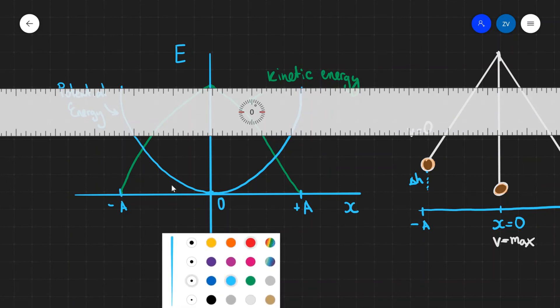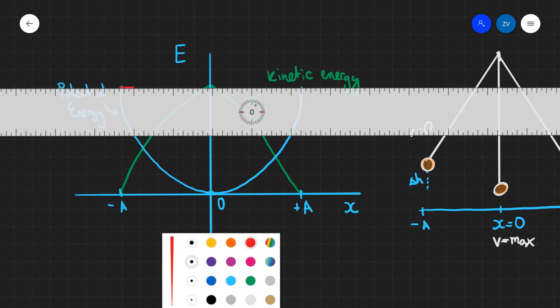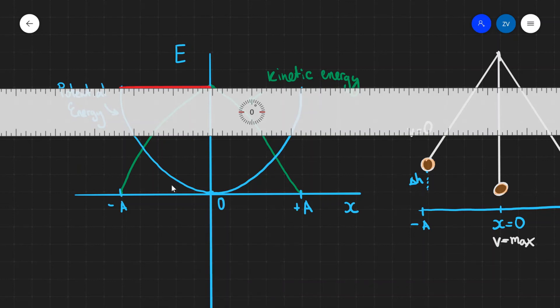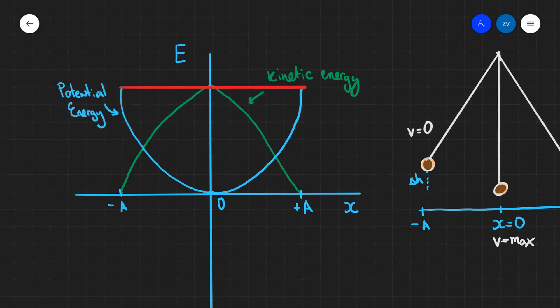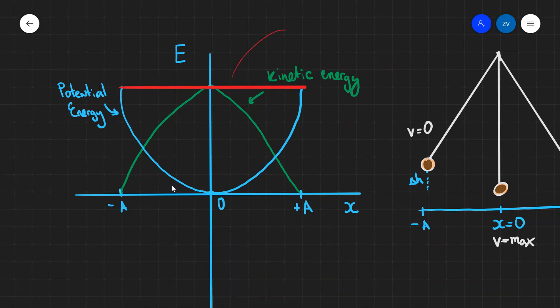We can draw this out here. Let's make this a little bit bigger because this is really important. This line in red will be the total energy. So we can write here that this bit over here is our total energy, which is equal to our kinetic energy plus the potential energy.